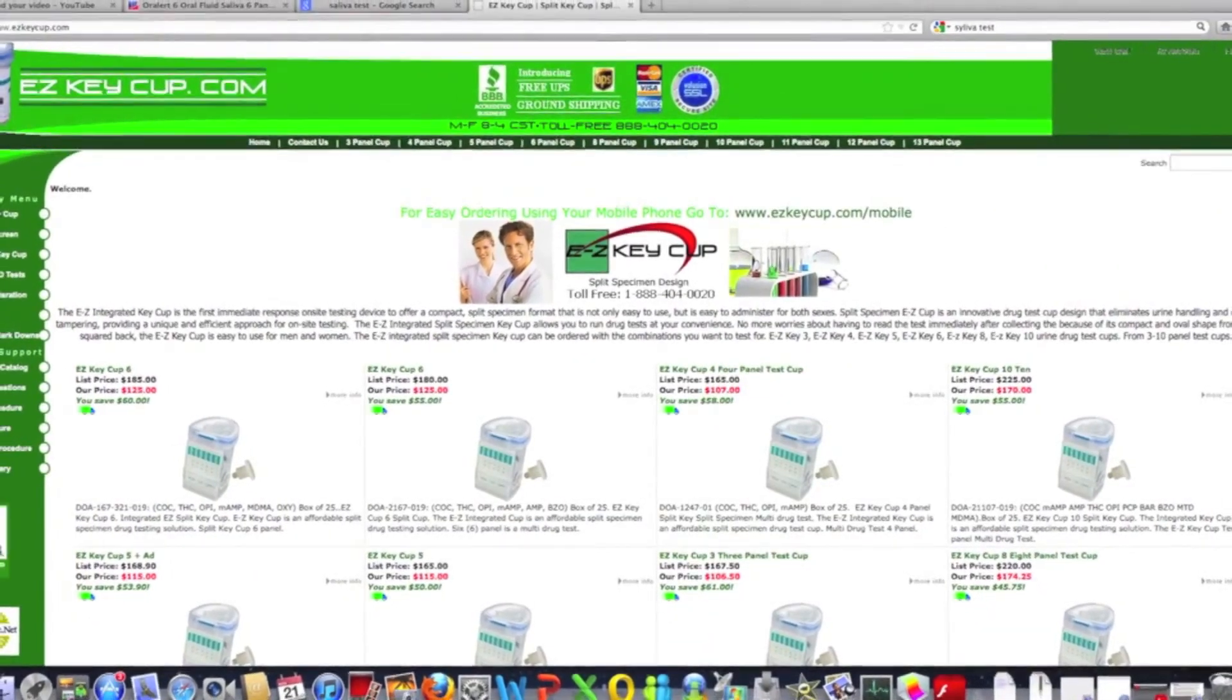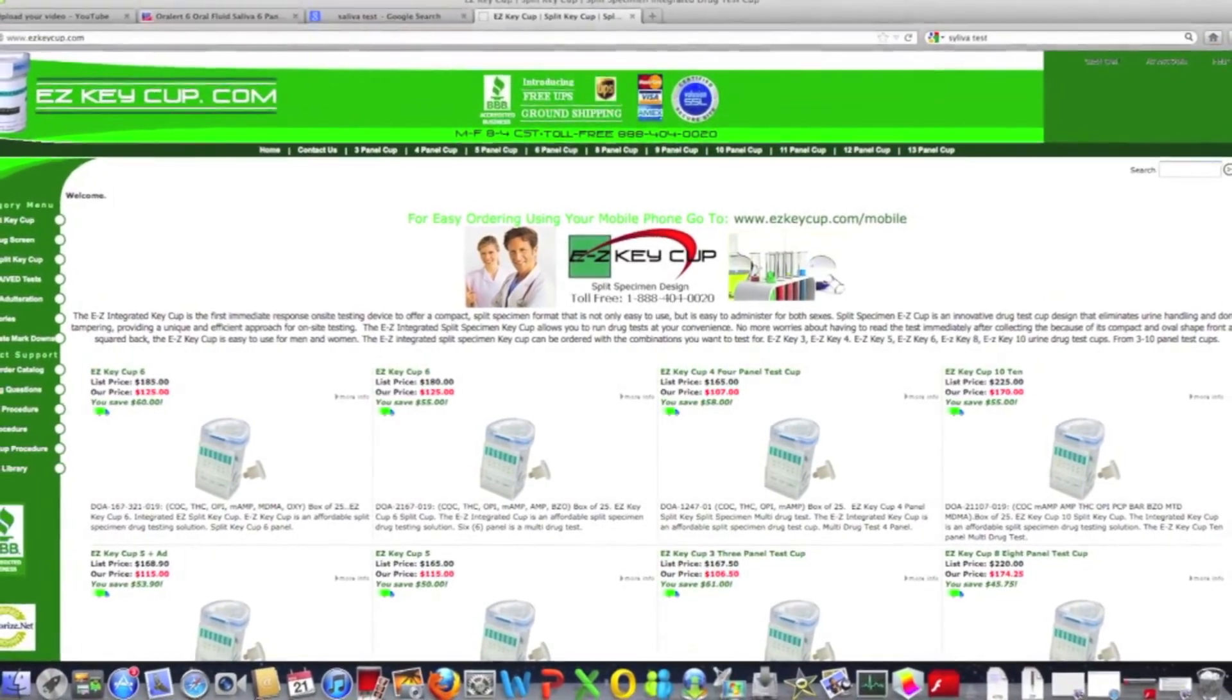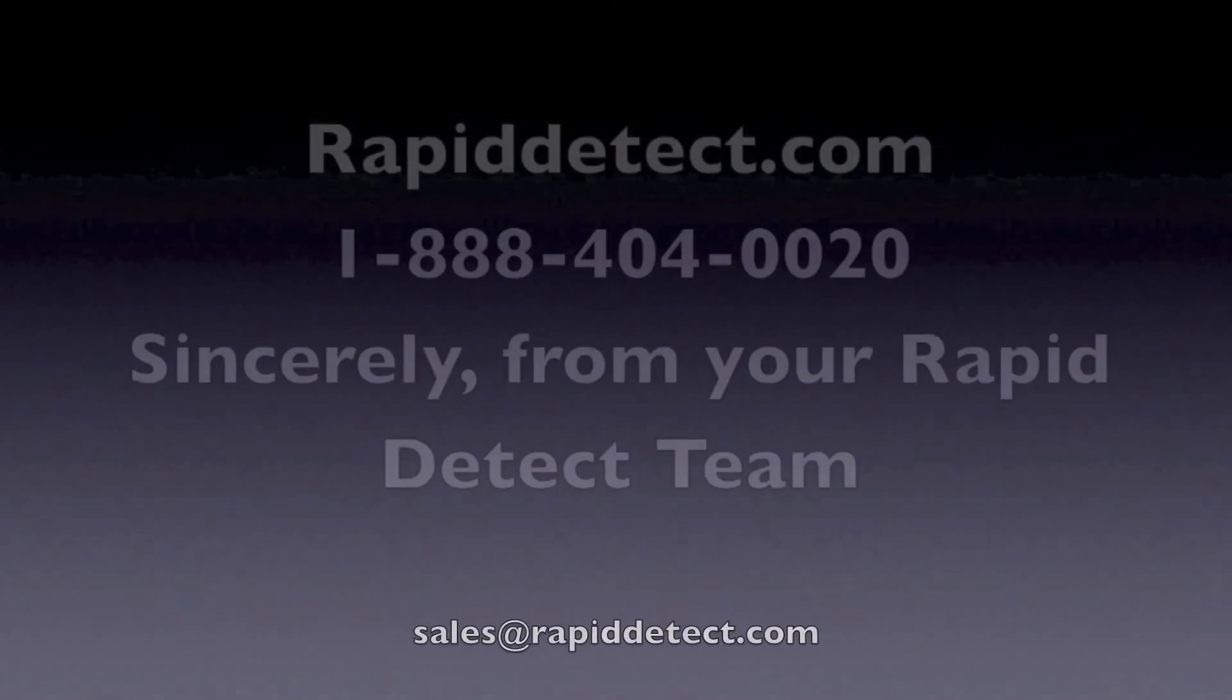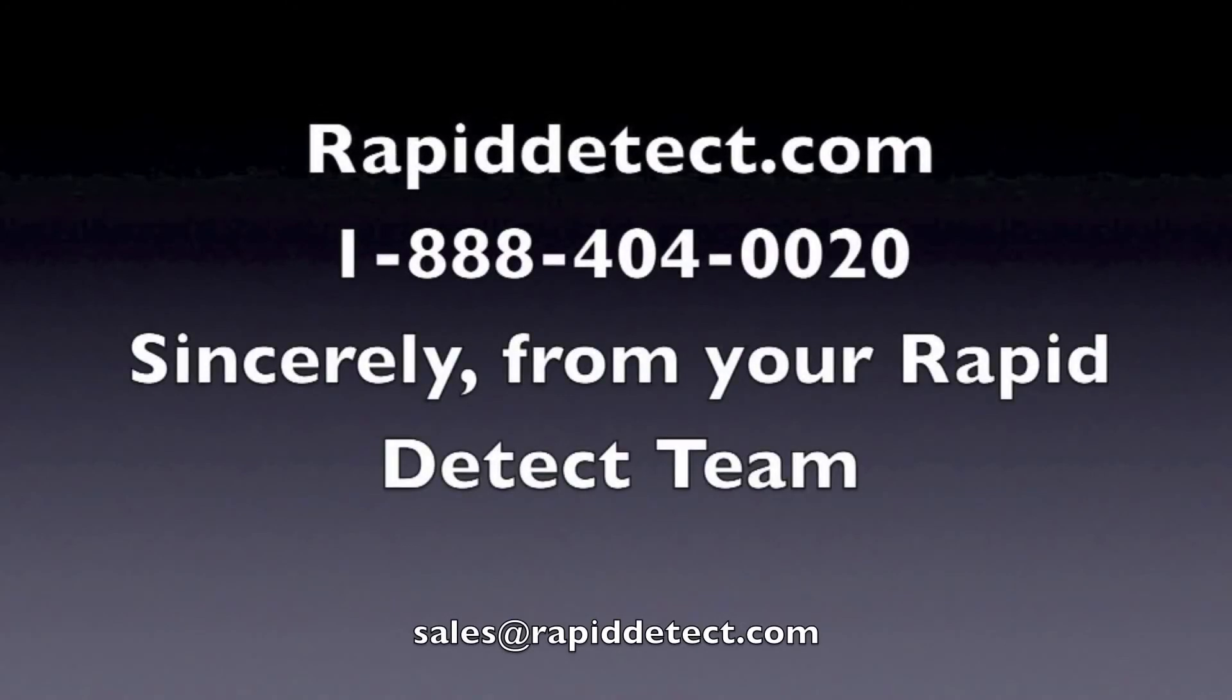For more information about the integrated EasyKeyCup, please visit our website at EasyKeyCup.com or call to speak with one of our friendly, knowledgeable sales consultants toll-free at 888-404-0020 weekdays from 8 a.m. until 4 p.m. Central Standard Time or email sales at rapiddetect.com.